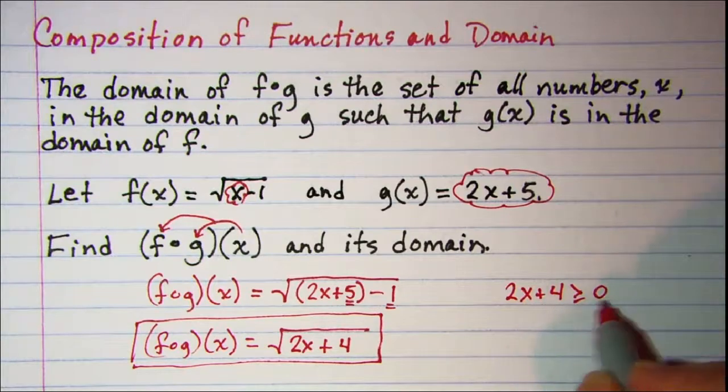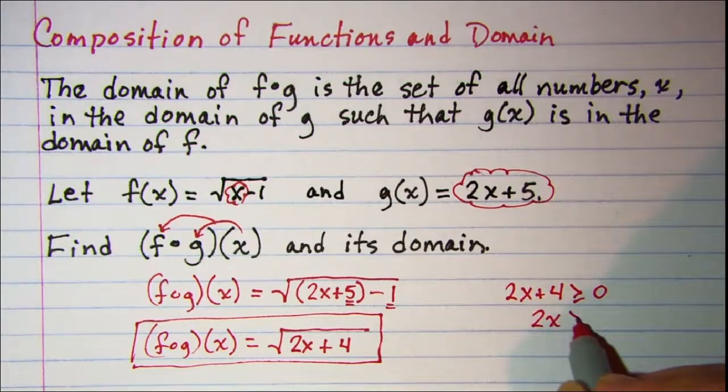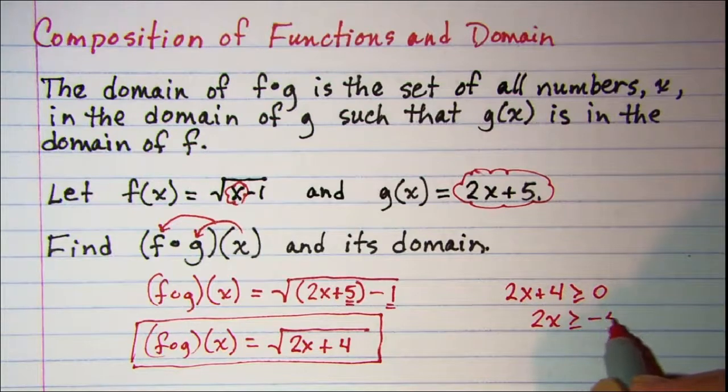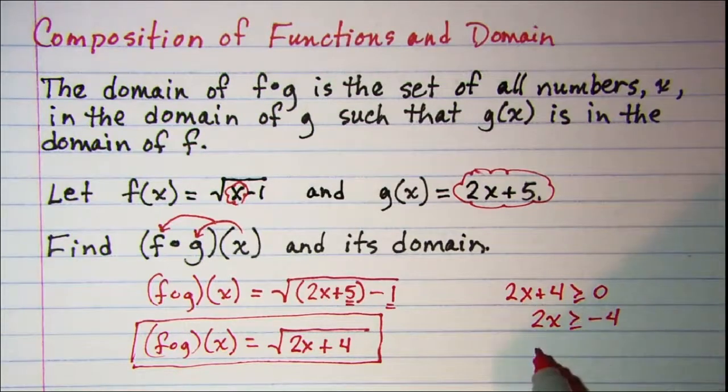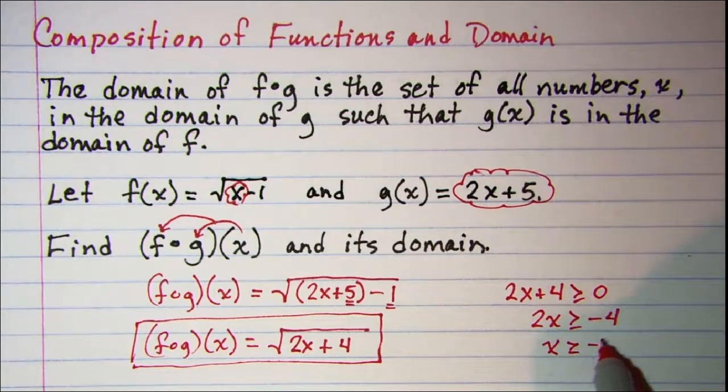Subtract 4 from both sides that gives us 2x is greater than or equal to negative 4. Dividing by 2, x is greater than or equal to negative 2.